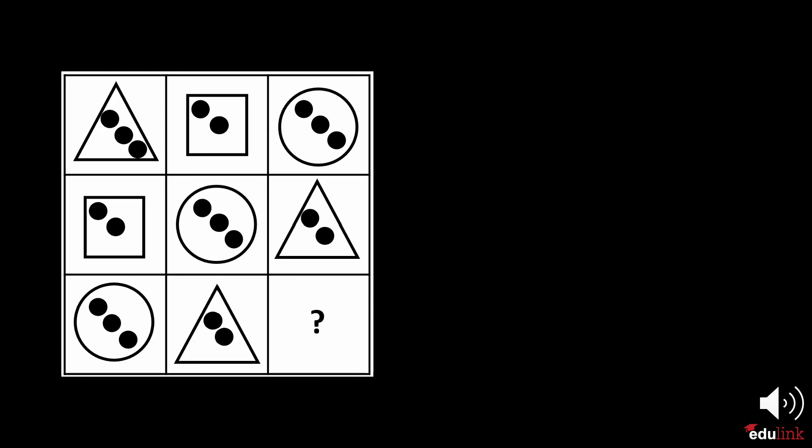This applies to every column and row. Take a close look at the pattern again. Can you complete it? A square with 3 dots must go in the empty field.